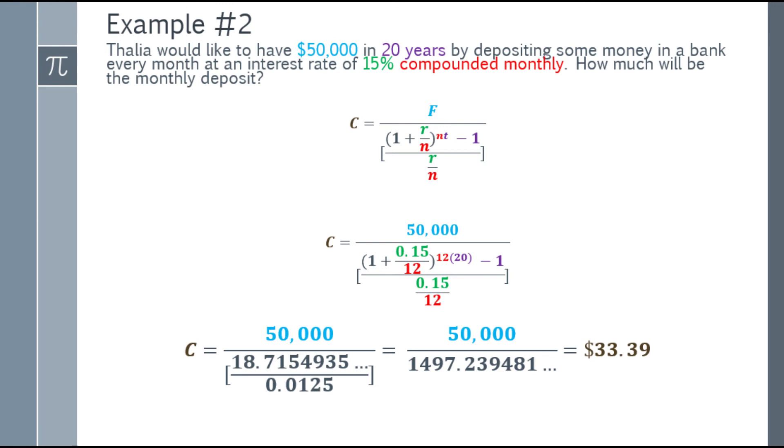I only rounded the number at the final answer. If we do it in the calculator, it should be continuous. The order shown on screen is how you should enter it in the calculator. Going back to the problem, the amount Thalia needs to deposit monthly to get $50,000 in 20 years in the future with an interest rate of 15% compounded monthly is $33.39.